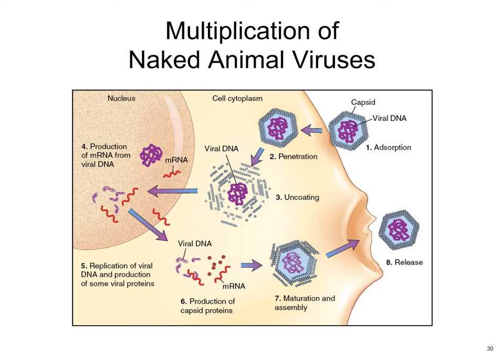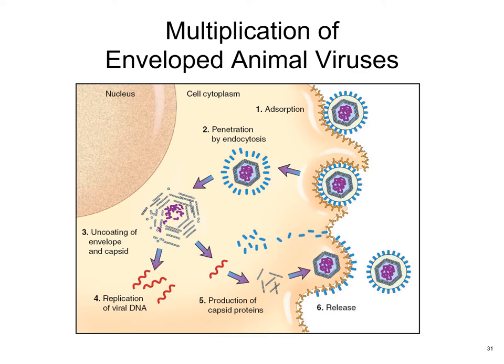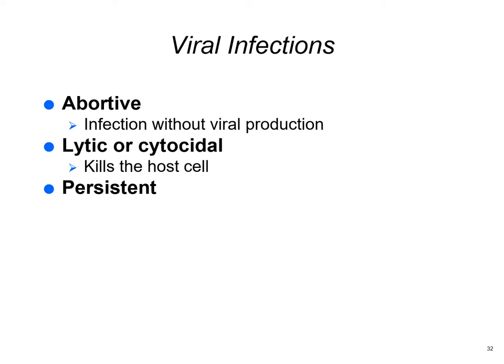Multiplication of naked animal viruses follows the same basic steps: adsorption, penetration, uncoating — the virus enters the cell as a DNA virus, messenger RNA is formed, causing viral DNA to be made within ribosomes, followed by maturation, assembly, and release. For enveloped viruses, the process is the same — adsorption, penetration, uncoating, viral replication, production of capsid proteins, assembly, and release — though enveloped viruses may be better at evading your defense mechanisms.